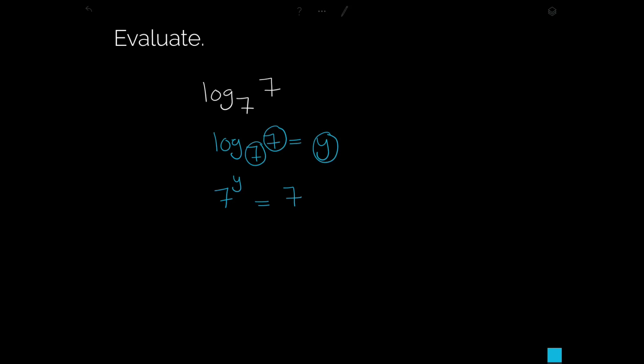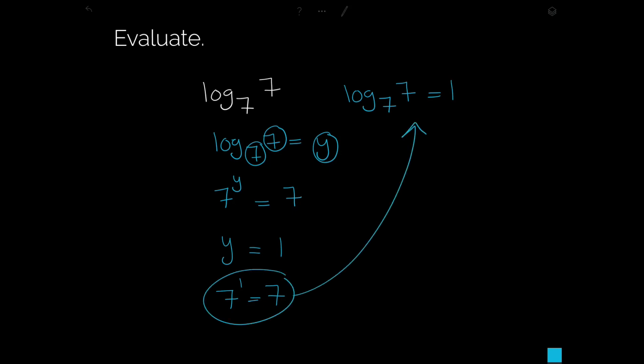Now think of an exponent that, when 7 is raised to it, gives you 7. A number equals itself in an exponential function if and only if the exponent is 1. So log base 7 of 7 equals 1, because 7 to the first power equals 7.